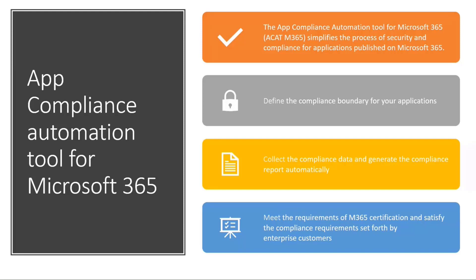Once you define a compliance boundary for an application, we collect the compliance data, run a set of policies, and generate a compliance report. This report tells you exactly what controls need to be fixed, what controls need more attention, and what sequence of steps you can follow to fix those controls. Once you meet those control requirements, we integrate the process with the overall Microsoft 365 certification process in Partner Center.